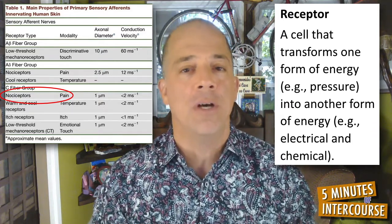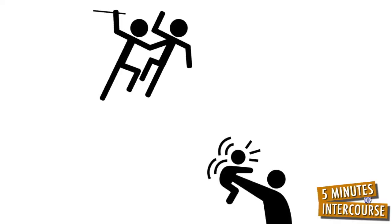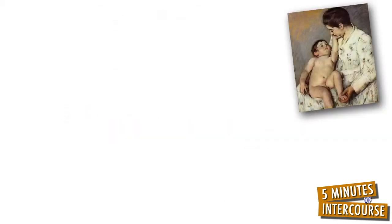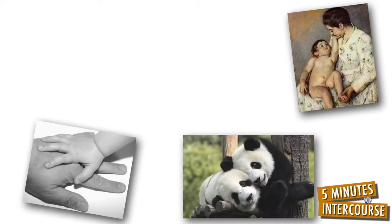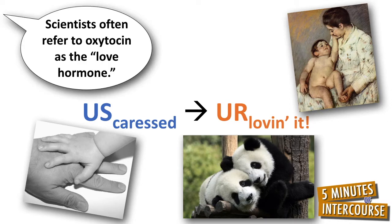Another type of receptor, called a low-threshold mechanoreceptor, detects pleasure. If we're harshly touched or physically hit, the nociceptors within our skin are activated and we automatically withdraw, cry, or run away. If, however, we're caressed or touched in a soft, warm, and yielding way, the low-threshold mechanoreceptors within our skin are activated, the neurotransmitter oxytocin is likely produced, and we automatically stay near the touch or seek it out when it's not around us. World-renowned psychologist Harry Harlow called this soft, warm, and yielding type of touch a contact comfort touch. Contact comfort touches are associated with bonding and love.